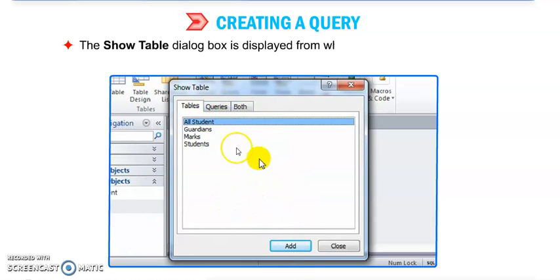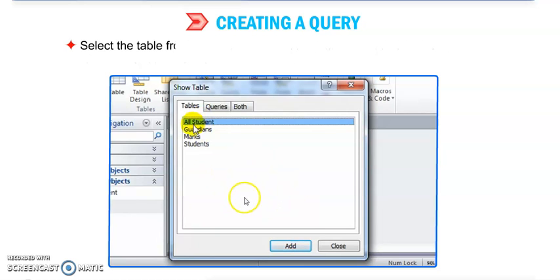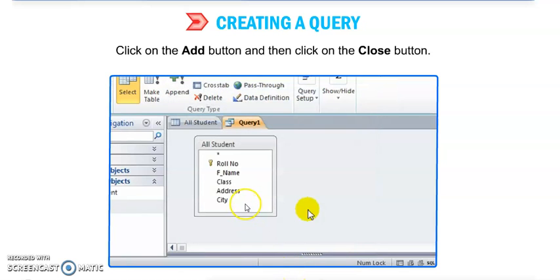Now the Show Table dialog box is displayed, from which you can select tables or queries to add to the query design. In this table, select a table from the Show Table dialog box in which you would like to run a query. Select that query and click on Add button.